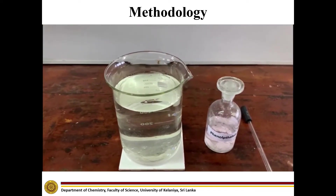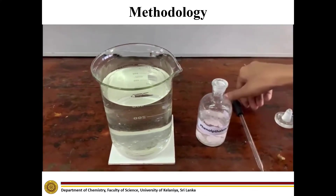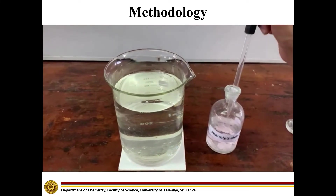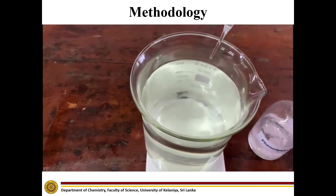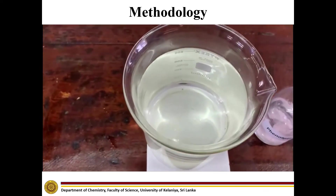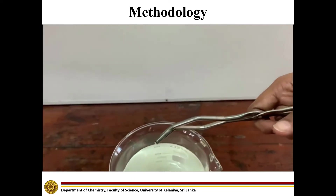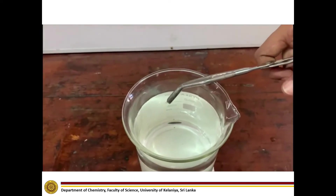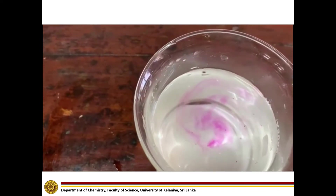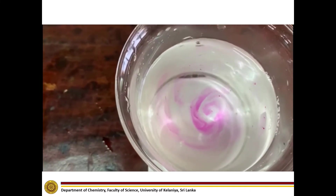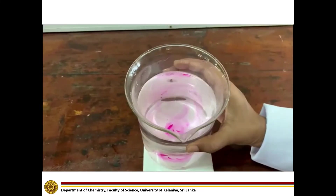In the fifth step, we are going to observe the reaction of sodium metal with water. First, we have to add a few drops of phenolphthalein indicator. Then add a small piece of sodium metal. You can now observe how a pink colour develops in the water.